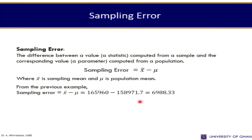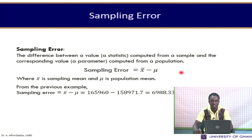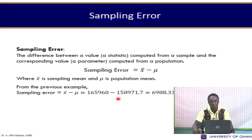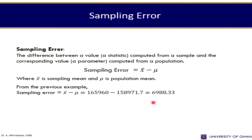Sampling error is the difference between a value computed from a sample (a sample statistic) and the corresponding value computed from the population (the population parameter). So sampling error is x-bar minus mu — the sample statistic minus the population parameter. From the previous example, the sampling error is 165,960 minus 158,971.7, which gives an error value of 6,988.33.